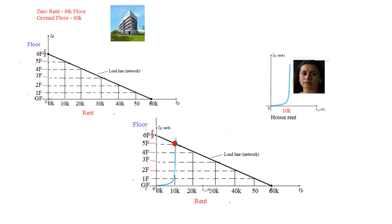So this point is now called the operating point and we can write it in brackets as 5th floor and 10k rent. So this is a very crude way of explaining what is load line and what is operating point. But I hope this will give you some idea. Now let's solve the actual problem.